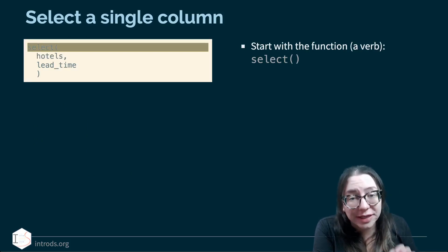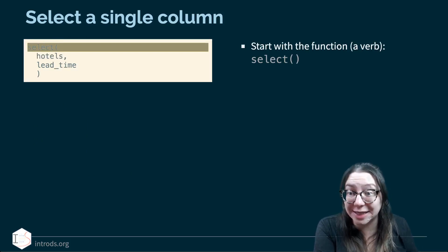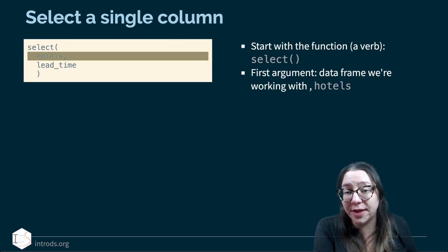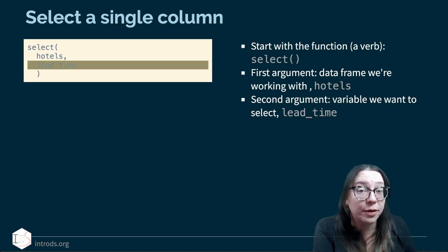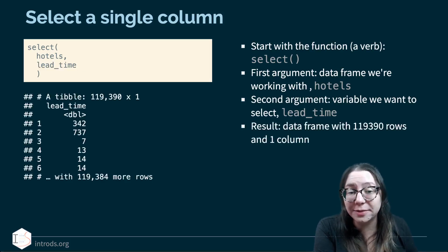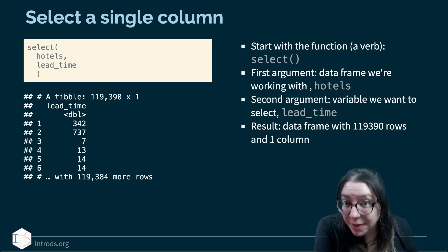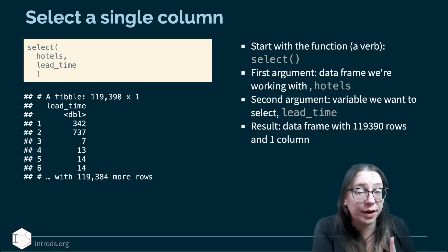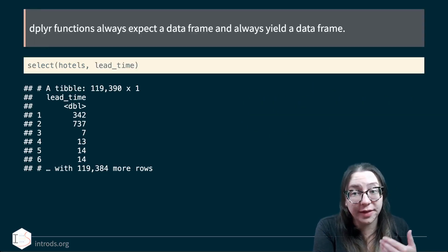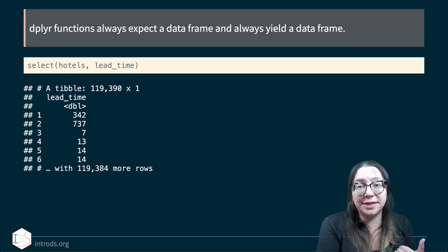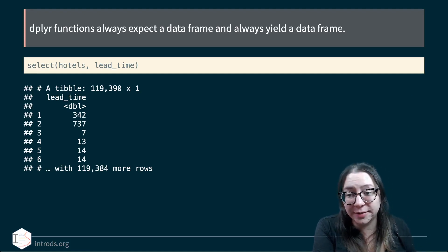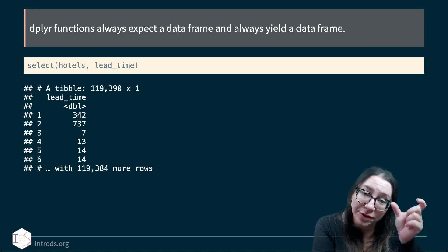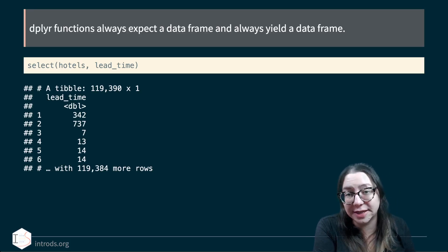Let's dissect how this function works. We start with the function, which is a verb — in this case, select. The first argument is the data frame we're working with, hotels. The second argument is lead_time, the variable we want to select. The result is a data frame with 119,390 rows but only one column instead of all 32. dplyr functions always yield a data frame, not a vector.